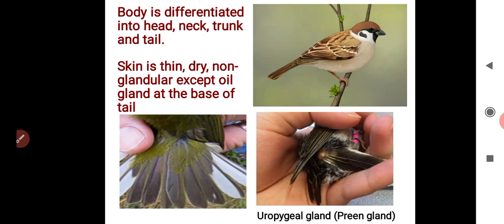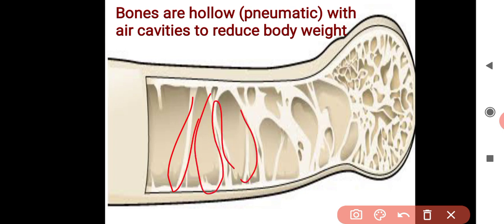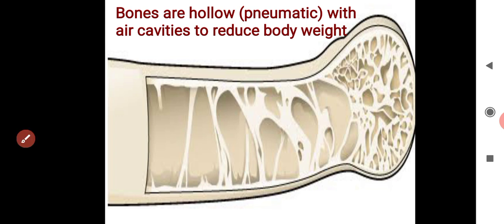So the body of birds is normally non-glandular skin, except for the preen gland present at the base of the tail. Bones are hollow — this is a special character found in birds. Hollow bones are also known as pneumatic bones and are filled with air cavities, which reduces body weight so that the body is light.